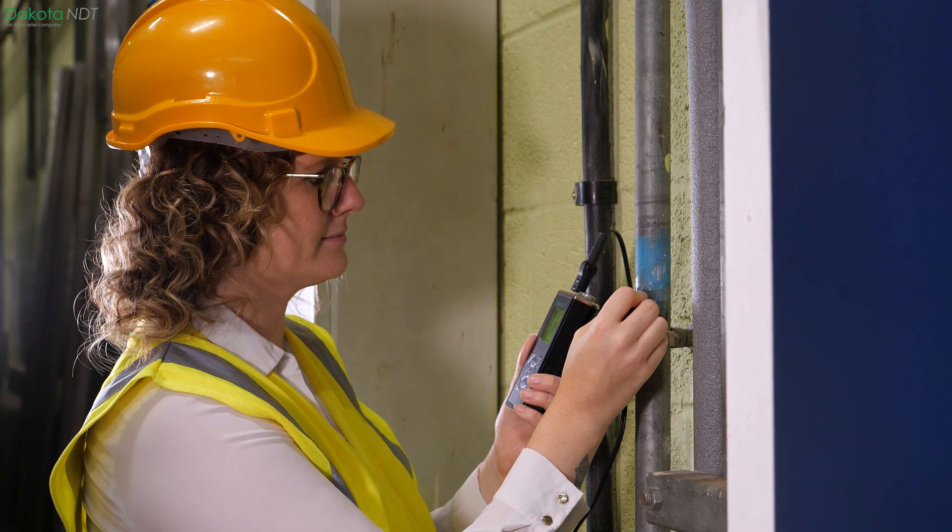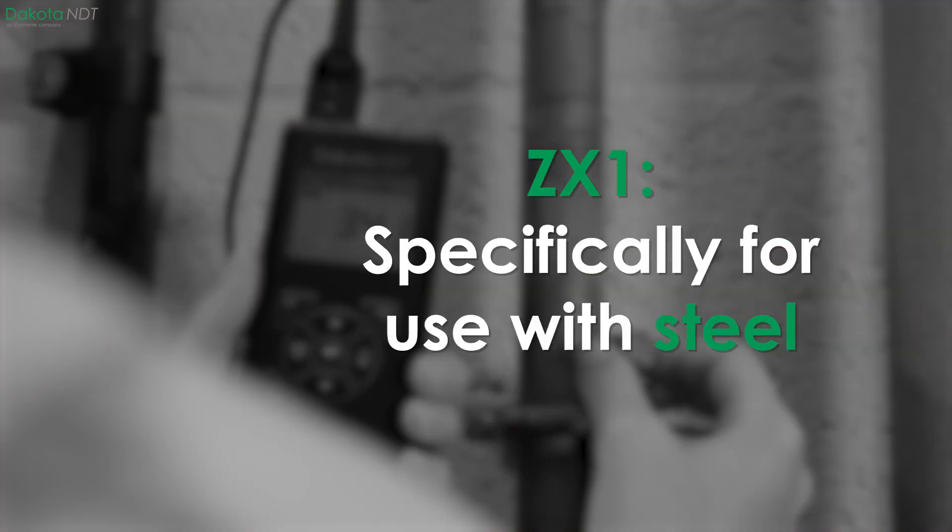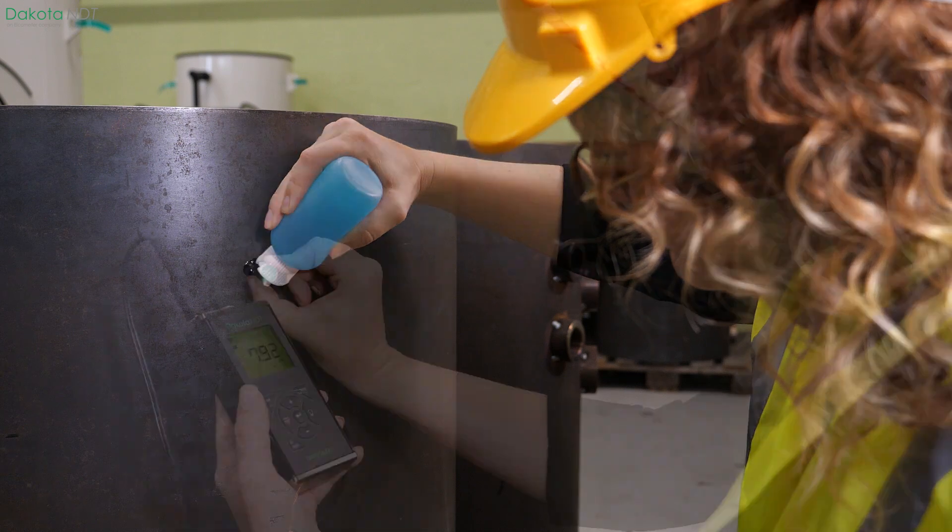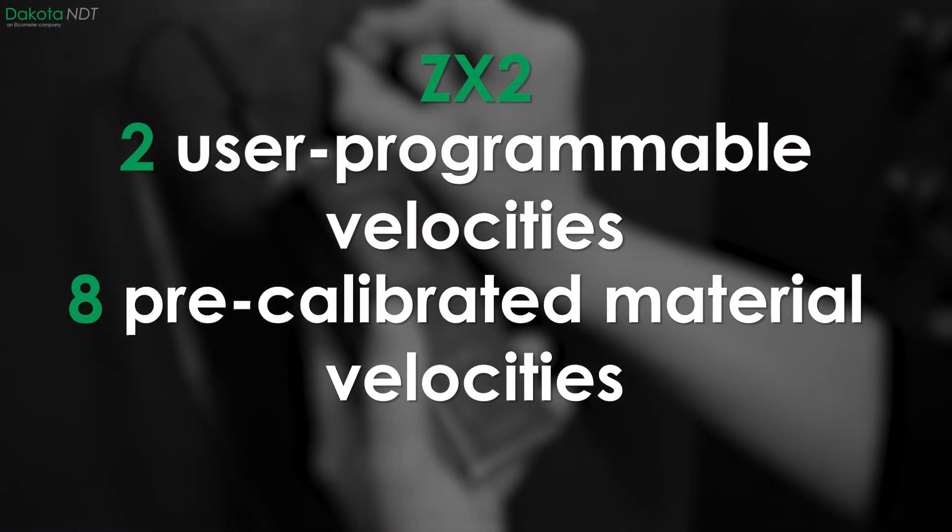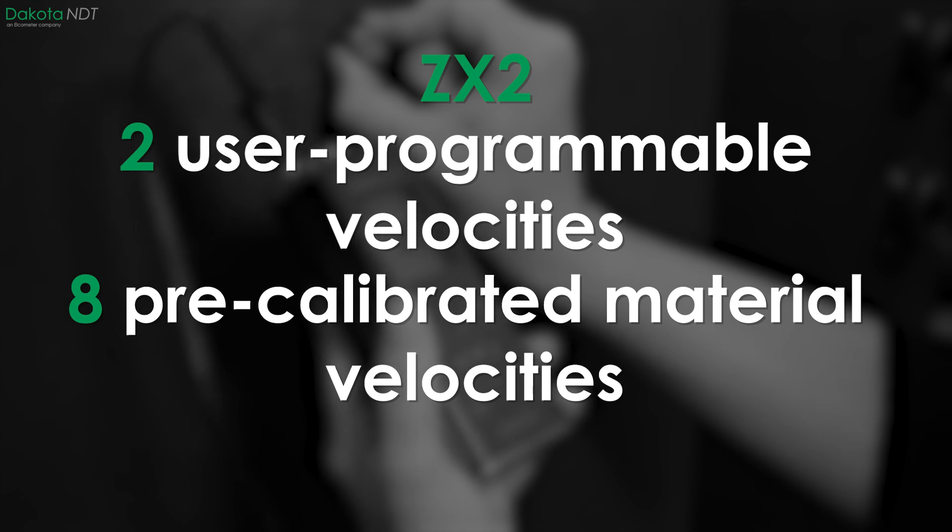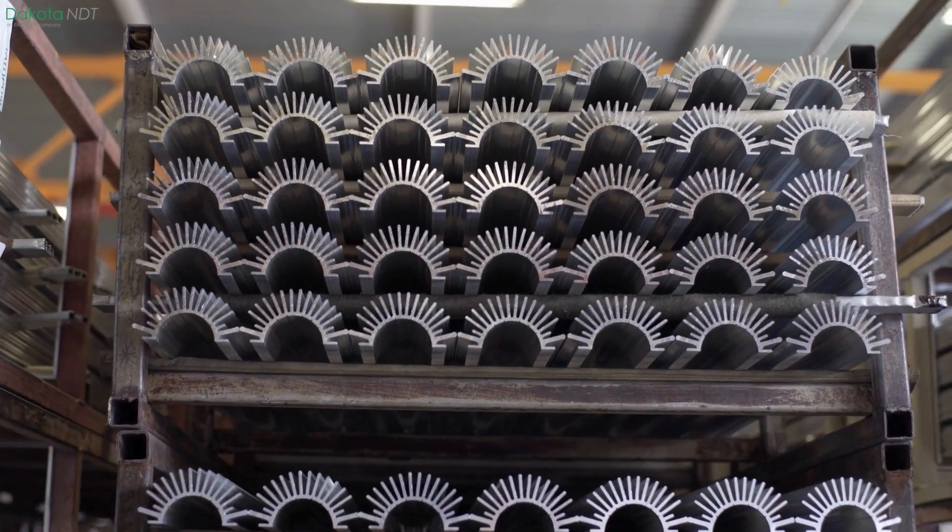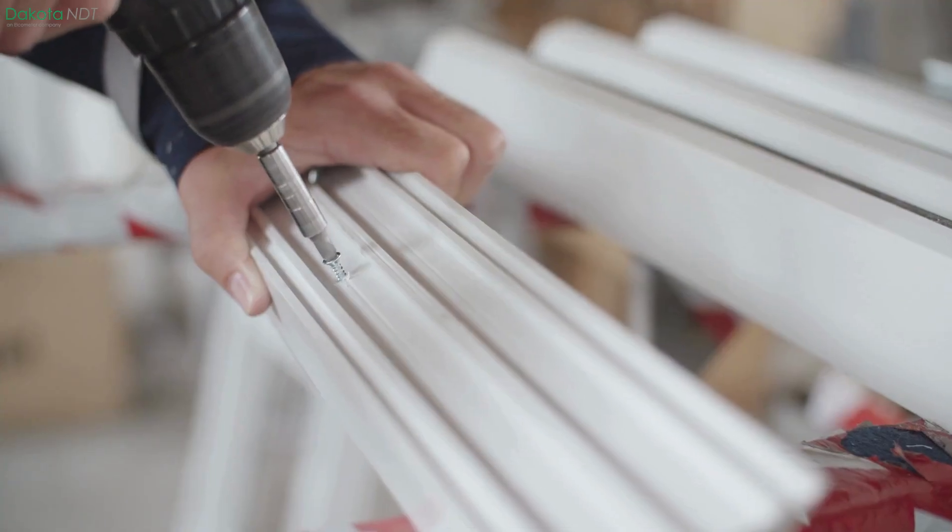The ZX1 features a single programmable velocity preset specifically for use with steel. As for the ZX2, it offers two user programmable velocities and eight pre-calibrated material velocities suitable for various materials including aluminum, plexiglass, polystyrene, PVC, and steel.